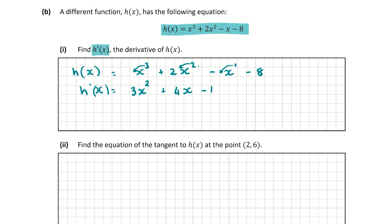We're left with -1. We reduce the power by 1, so it's x to the power of 0, which is just 1. So our answer here is -1. -8 is a constant, so the derivative of that is 0. So the derivative of h(x) is 3x² + 4x - 1. And for getting this correct, you're going to get a total of 10 marks.